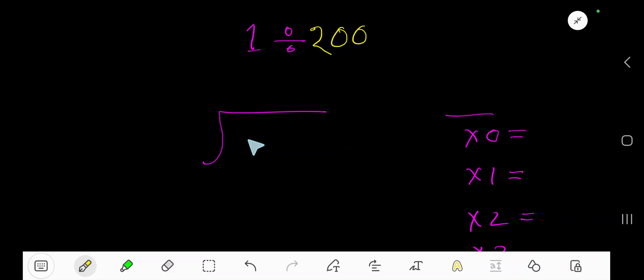1 divided by 200, right? Okay, write 1 here and divide by 200. 200 goes into 1 how many times? This 1 is less than 200, so 0 times. 0 times 200, that gives you 0. If you subtract, then you will get 1.